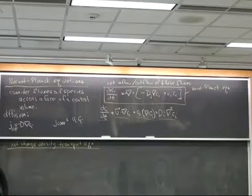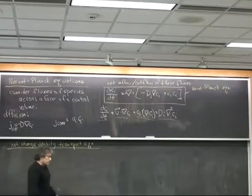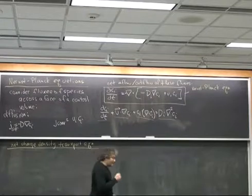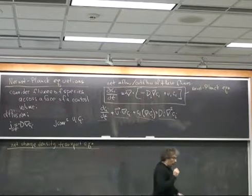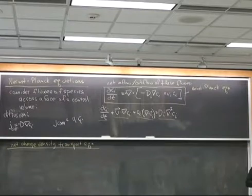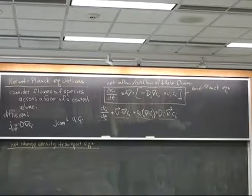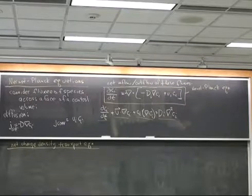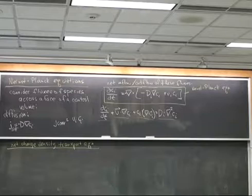The Nernst-Planck equation I've written is the easiest one to use if I'm really interested in individual ions — if I want to know what the sodium is doing, or what the chloride is doing. But a lot of times, what I really care about is the net charge density, because the net charge density is the thing I integrate to get the convective current. So I'd like to take this Nernst-Planck equation and put it into a form that really describes the transport of the net charge density.